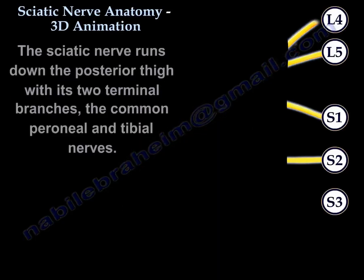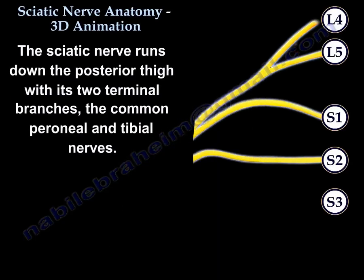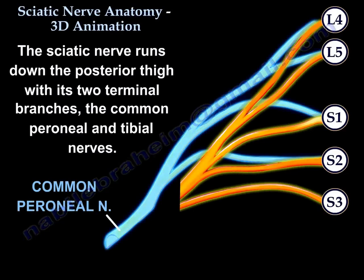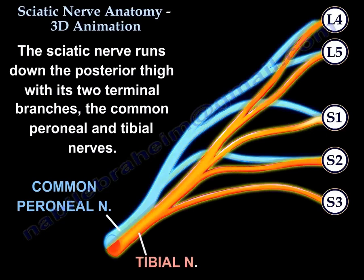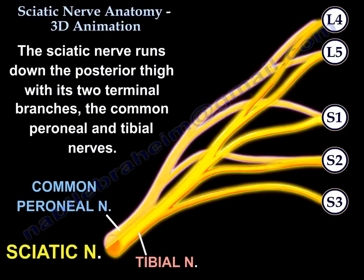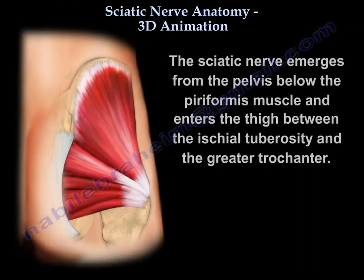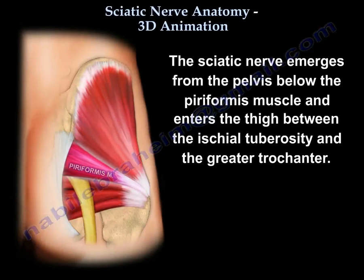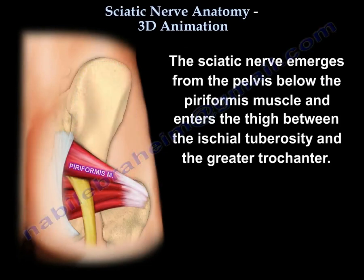The sciatic nerve runs down the posterior thigh with its two terminal branches, the common peroneal and the tibial nerves. The nerve emerges from the pelvis below the piriformis muscle and enters the thigh between the ischial tuberosity and the greater trochanter.